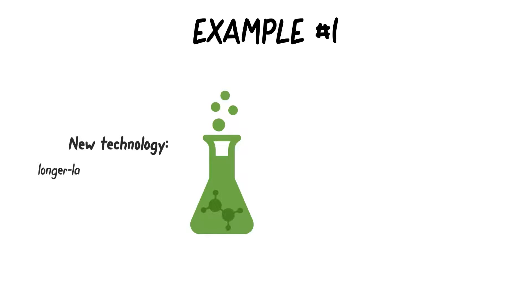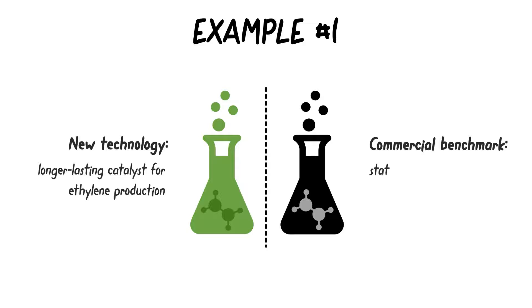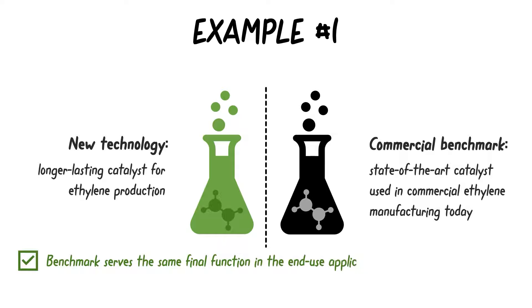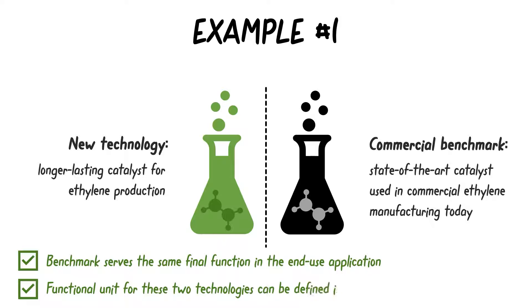Let's take a look at a few examples. If we are analyzing the potential impacts of a longer-lasting catalyst for ethylene production, the commercial benchmark may be the state-of-the-art catalyst used in commercial ethylene manufacturing today. This benchmark technology is an appropriate comparison because it represents an existing commercial product that serves the same final function in the end-use application. The functional unit for these two technologies can be defined identically, enabling objective comparison.